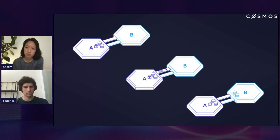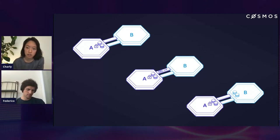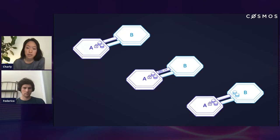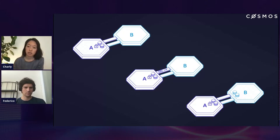Using a token transfer as an example — let's say this is a token transfer between Zone A and Zone B. What happens when a user on Zone A wants to transfer tokens to Zone B is that the tokens are first locked up on Zone A in an escrow contract. Then a small proof is passed across to Zone B. The transaction is submitted saying I want to mint or transfer my tokens onto Zone B. The tokens are locked up on Zone A, and a proof of that lockup is passed along to Zone B.